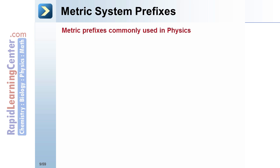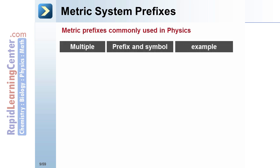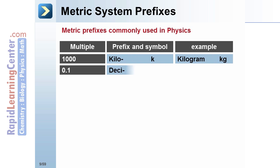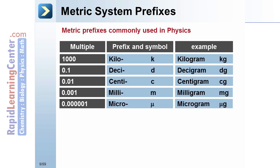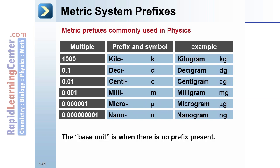Metric system prefixes: Not all metric prefixes are common in physics. Here are some that are commonly used. For each, the multiple of 10 is given, along with the prefix, symbol, and an example measurement. Common prefixes in physics include kilo, deci, centi, milli, micro, and nano.